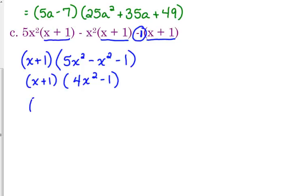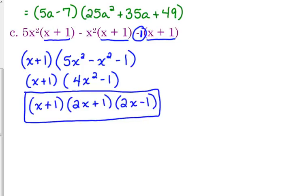4x squared is the difference of perfect squares. So that factors more into 2x plus 1 and 2x minus 1, and that is factored fully. That's the exact same expression. 4x squared minus 1 was the difference of perfect squares. So the square root of 4x squared is 2x, and the square root of 1 is 1. That's where that comes from.